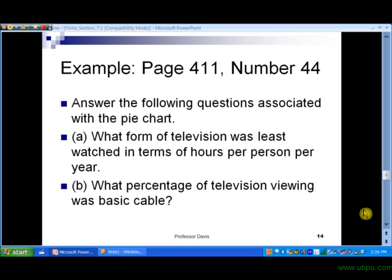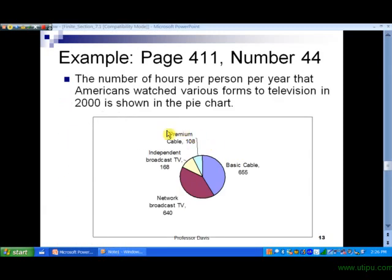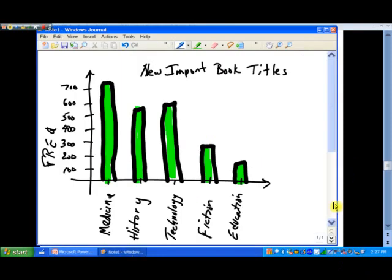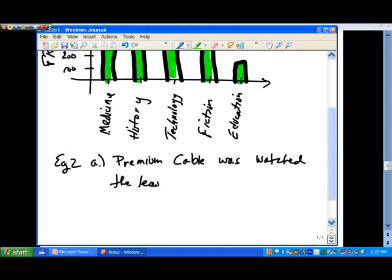And that's in slide number 14. First question: what form of television was least watched in terms of hours per person per year? Well let's see, let's answer that before we go any further. Well, it looks like if we look at the graph, it ends up being this premium cable, right? All right, so let's go ahead and write the answer to that down. For example 2 part a, premium cable was watched the least.